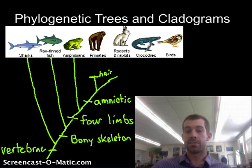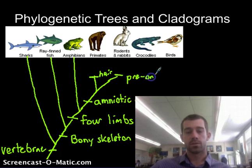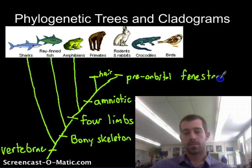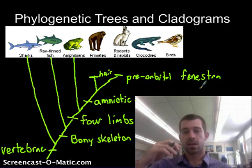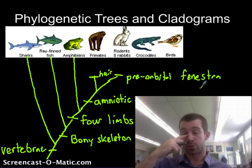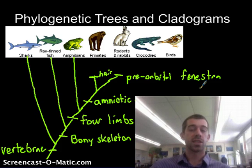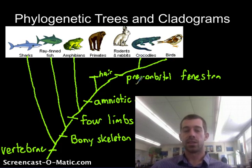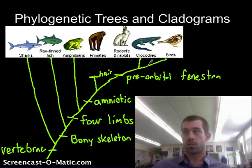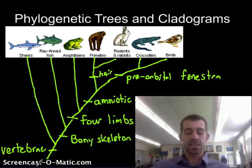We're looking for something that crocodiles and birds have in common, which is what we call a pre-orbital fenestra — a really big word that means a hollow place in the skull in front of the eye. If we had a pre-orbital fenestra, we'd have a hollow spot somewhere in the bridge of our nose. Crocodiles and birds have that because it makes their heads lighter, which is good for birds because they can fly, and good for crocodiles because they have really big heads. Crocodiles and birds don't have another distinguishing trait here, so we're not going to add anything else in that branch.